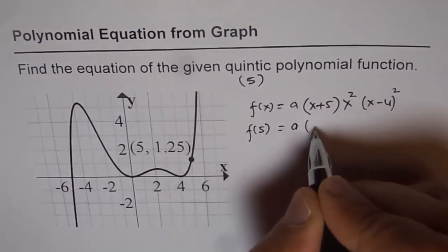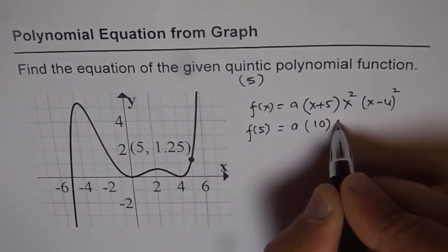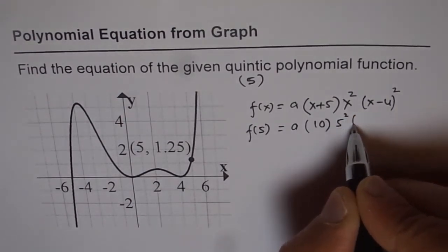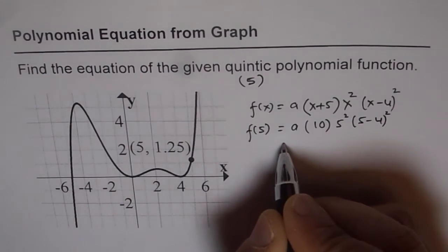We will write down this value: 5 plus 5 which is 10 and 5 squared which is 25 times 5 minus 4 which is 1. So let's calculate this.